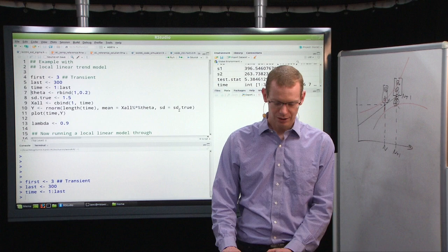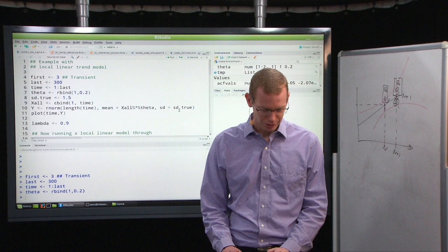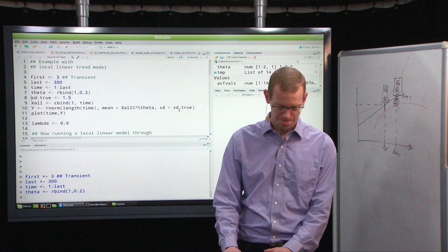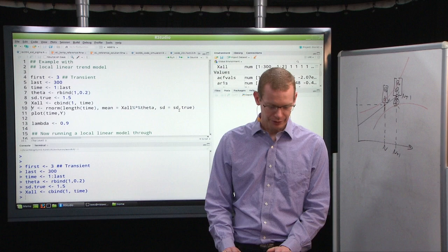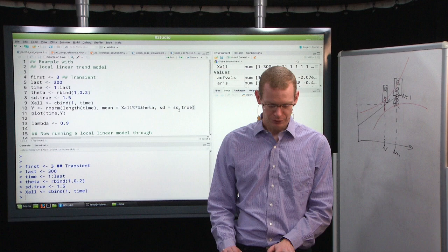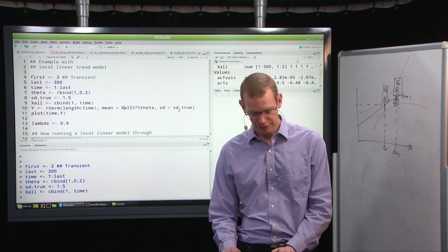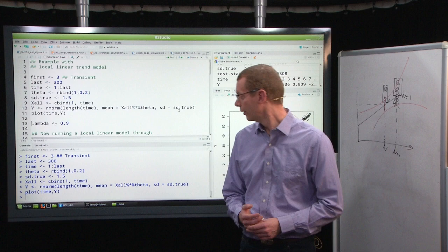I will use a time variable that is 1 through n. And I have some parameters, theta, that's just 1 and 0.2. It doesn't matter too much. I will use a true standard deviation of 1.5. Then I will just use the general linear model. And then I will generate some random normal distribution numbers. I will do one for each time point with the x times theta, mean value, and the same standard deviation everywhere. And then let's just look at that.